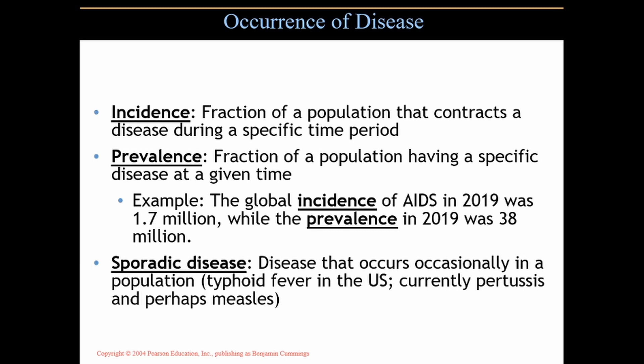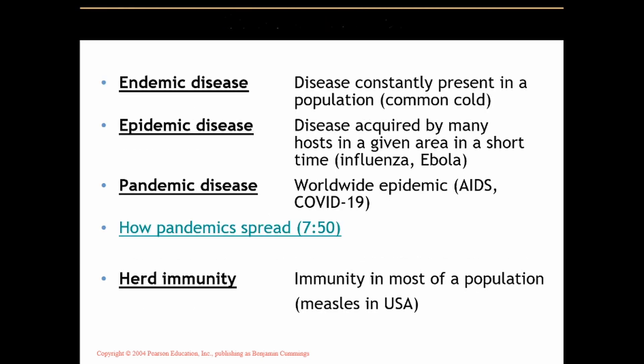Sporadic diseases come on the scene, then go away, then come back again later. An endemic disease is one that is always present in a population, like the common cold — it's an endemic disease we're always going to have.